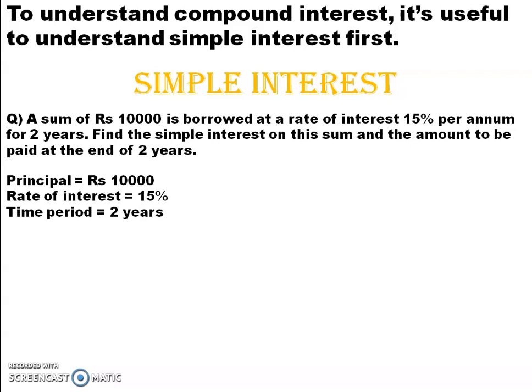Principal: the amount which the person takes from the bank or deposits in the bank is known as principal. Rate of interest is 15% — you are calculating the interest as a percentage of this rate. Then there is the time period — the period for which the person is taking the money. It is known as the time period.